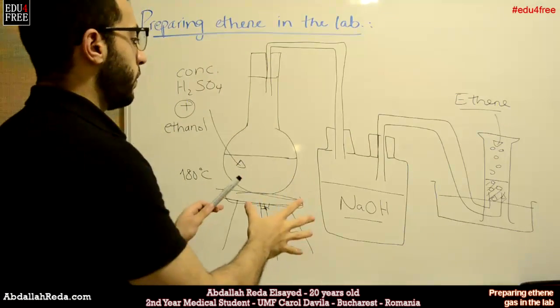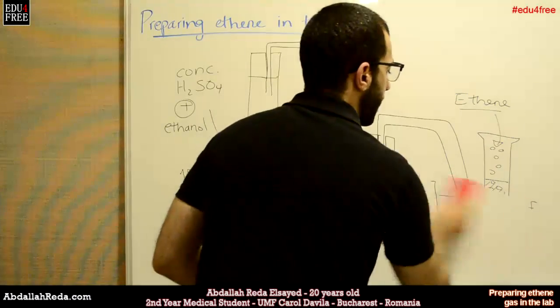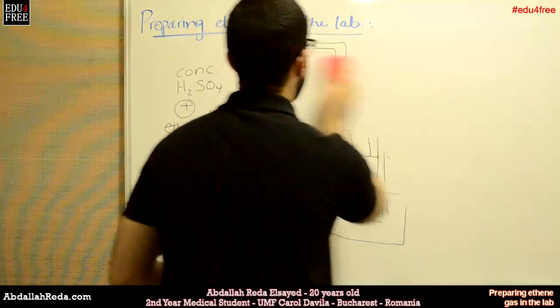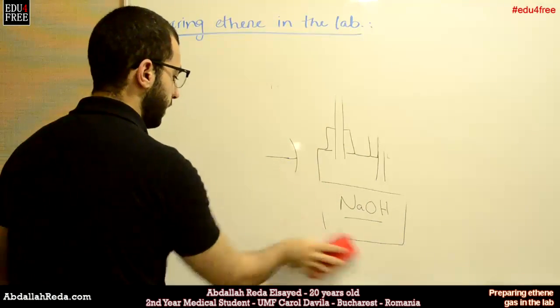So this is how to prepare it. Now, we need to understand the chemical reactions that happened that led to the formation of ethene gas.